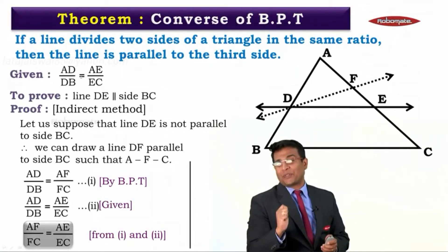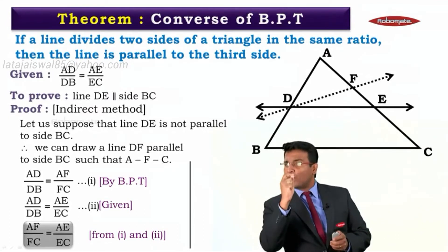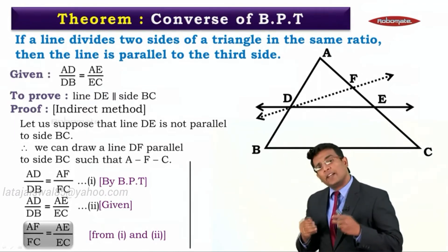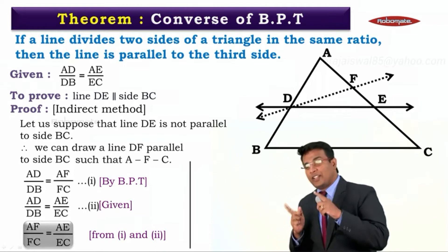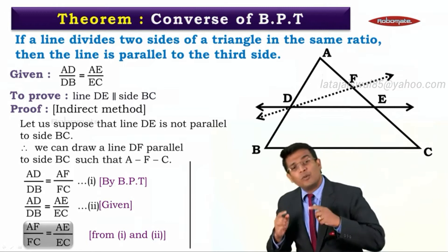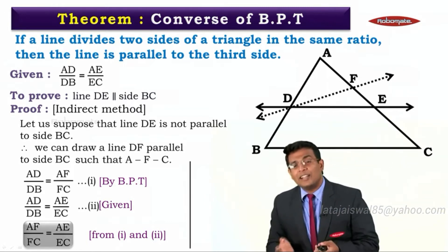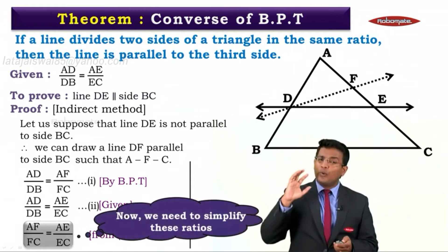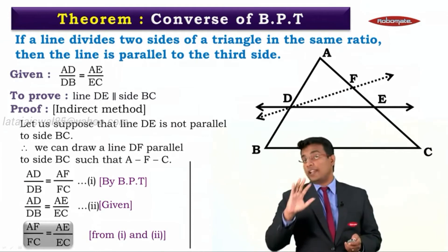This is where we left off: AF upon FC is equal to AE upon EC. Now how do you proceed further? You might say there are two ratios which are equal, so cross multiply: AF × EC = AE × FC. But if you cross multiply it is not going to simplify — you will not get anything further. So let's think about how to simplify these ratios.